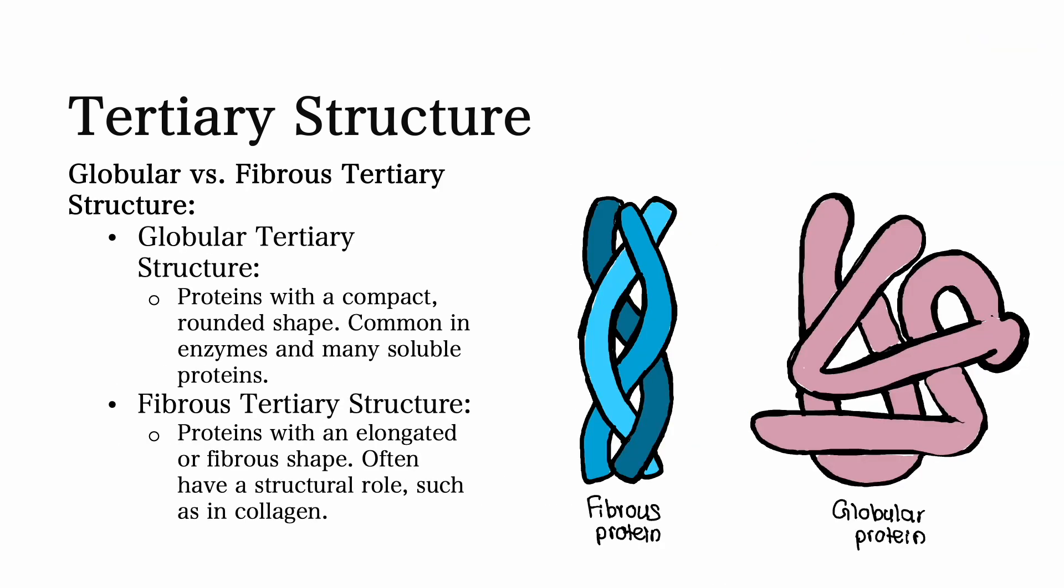Tertiary structures can also be classified as globular structures and fibrous structures. Globular tertiary structures refer to proteins that are compact and are rounded in shape. This type of structure is common in enzymes and many soluble proteins.